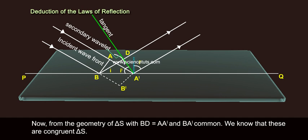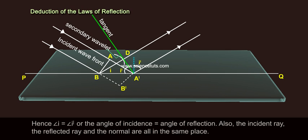Now, from the geometry of triangles with BD equals to AA' and BA' common, we know that these are congruent triangles. Hence, angle I equals to angle I', or the angle of incidence equals to angle of reflection.